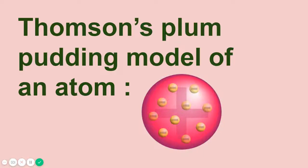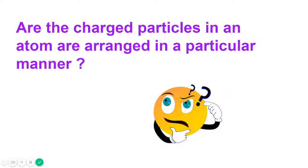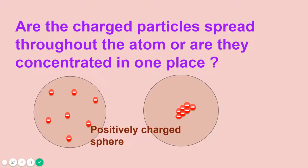Hello students, this video deals with Thomson's plum pudding model of an atom. So let's start the video. Are the charged particles arranged in any particular manner? This was the question of the day. Or are charged particles spread throughout the atom, or are they concentrated in one place?